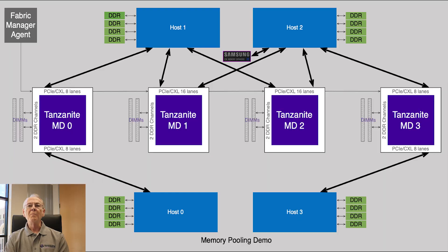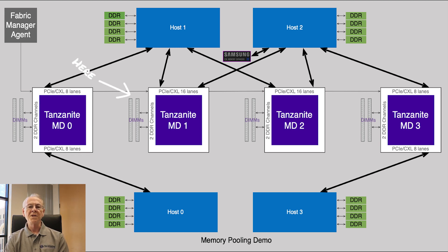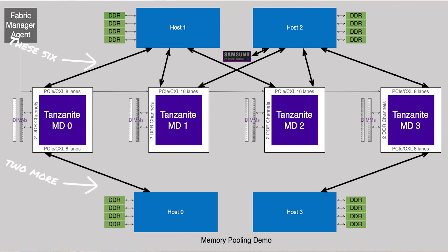In today's demonstration, we're showing four Tanzanite memory devices and four hosts similar to the previous picture. In this particular case, each of the devices has two host links and two DDR links. Host 2 also has the Samsung memory expander card for additional memory. Each host communicates over the CXL links to the devices, and there are nine total devices in this picture — eight memory pooling devices and one CXL expander.